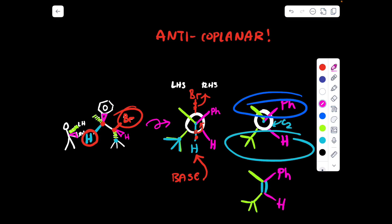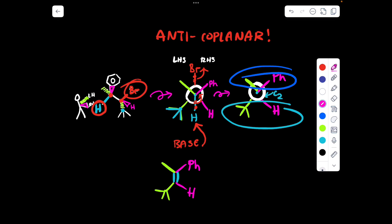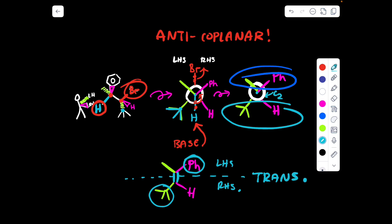That would be our product. To determine if this double bond is going to be cis or trans, we need to prioritize the groups on both sides of the double bond. Chop the double bond in half and rank the groups on both the left-hand side and the right-hand side. The phenyl group is going to win on the left-hand side, and on the right-hand side the tert-butyl group will win. So we obtain the trans stereoisomer.